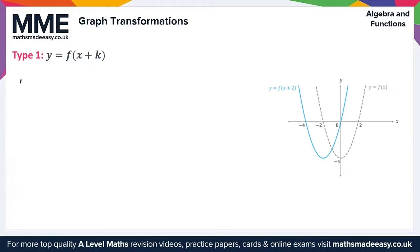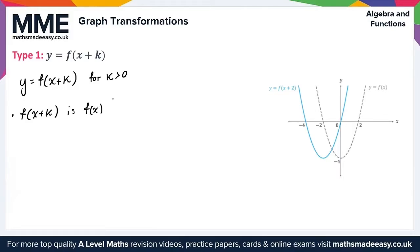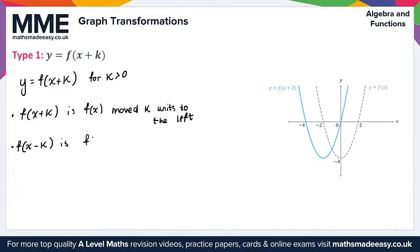For the transformation y equals f of x plus k, with k greater than 0, f of x plus k is f of x moved k units to the left. And f of x minus k is f of x moved k units to the right.